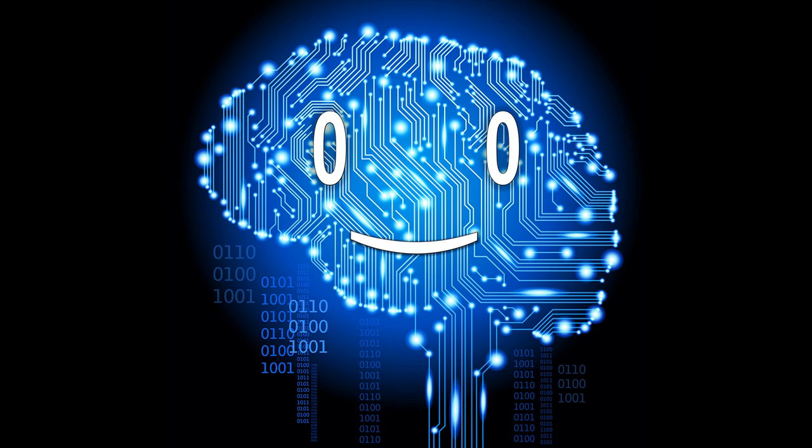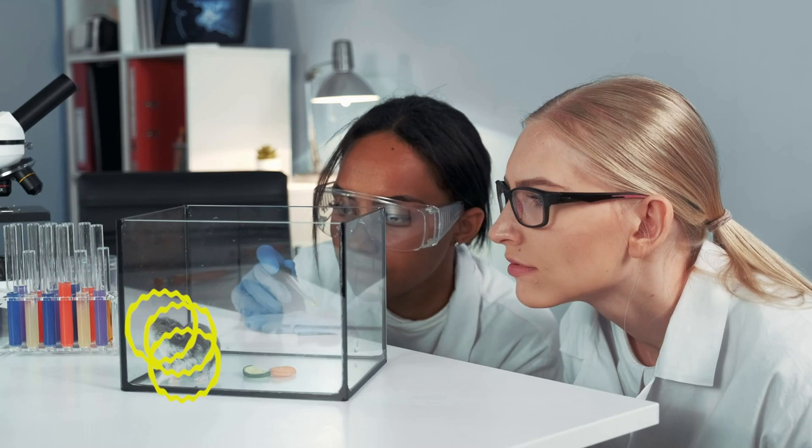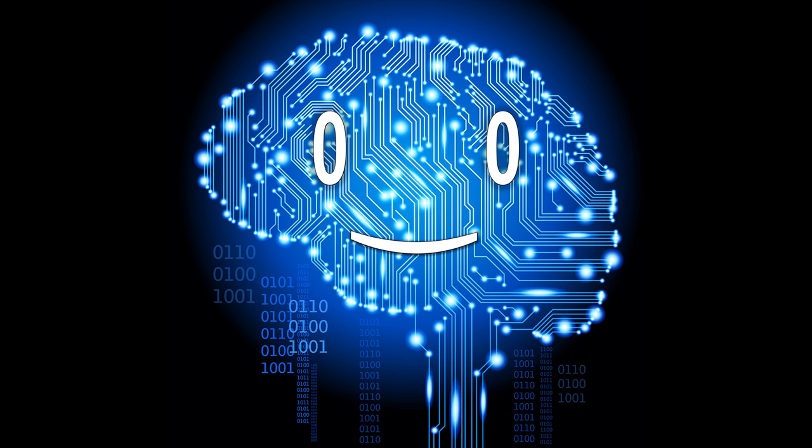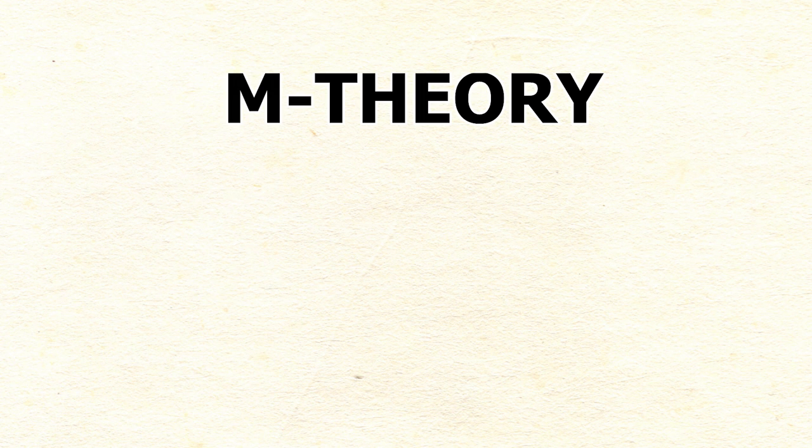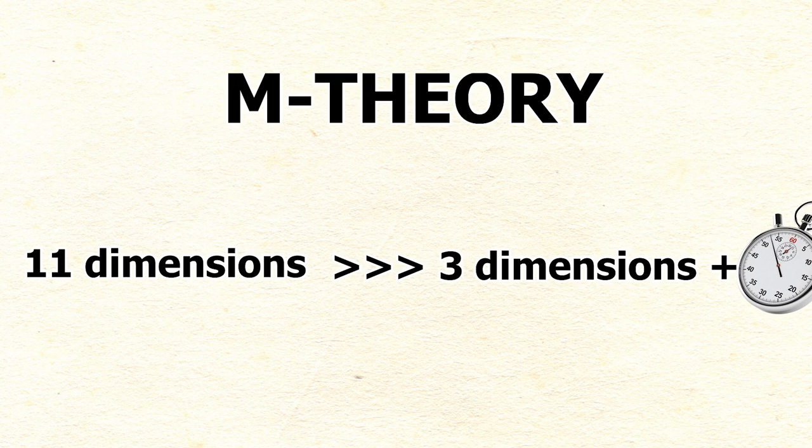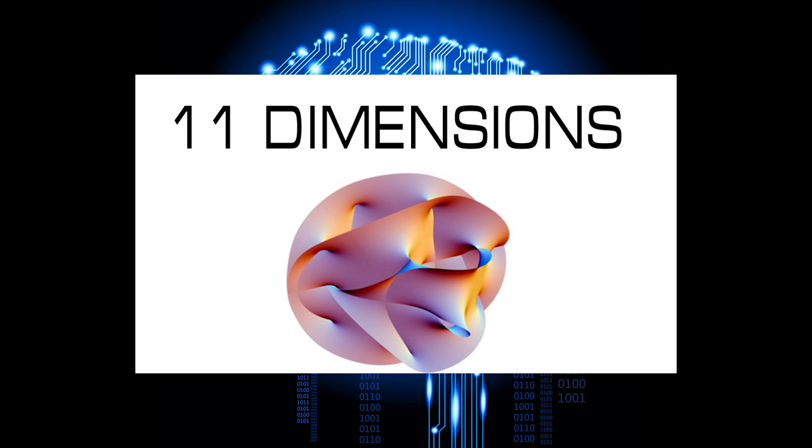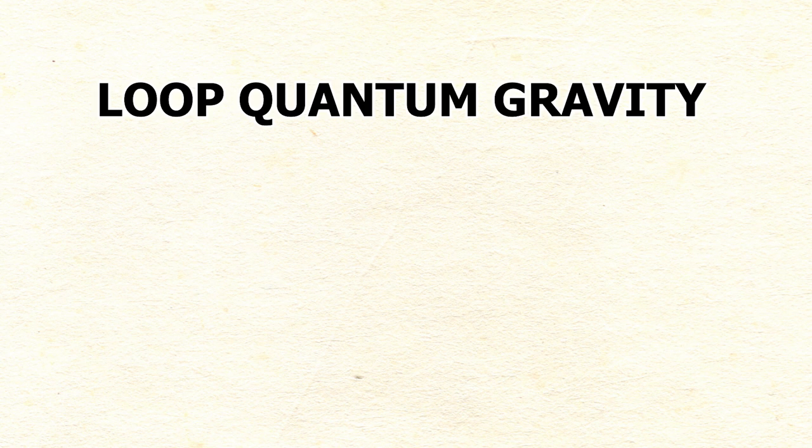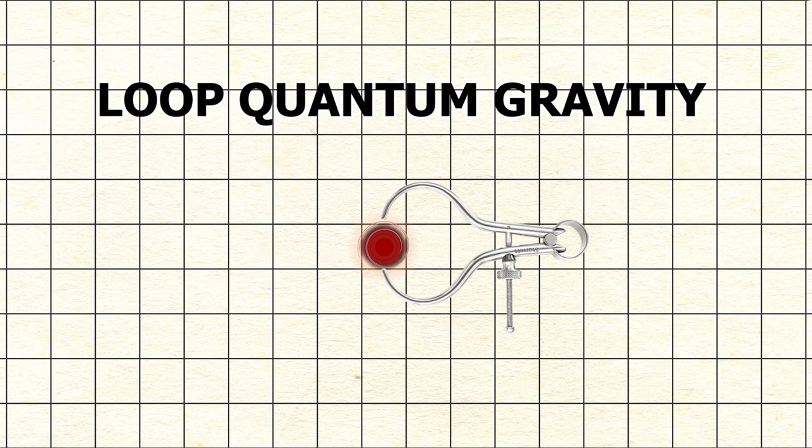The problem with any string theory is, however, that each one of them is very difficult to test experimentally, as the strings would be incredibly tiny. Besides that, the M theory requires that the universe has eleven dimensions, compared to the three we're used to excluding time. More on that in this video. As with loop quantum gravity, the problem is fairly similar. The quanta of space are so small, that there are no and there will be no tools or ways to check the plausibility of these theories.